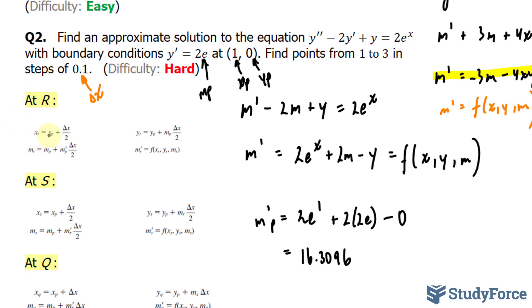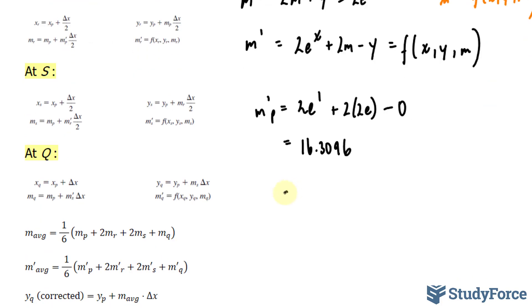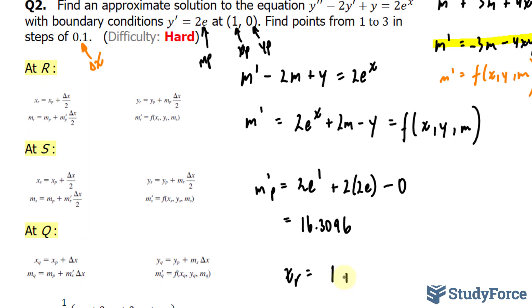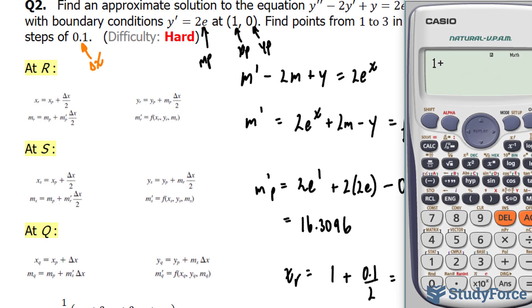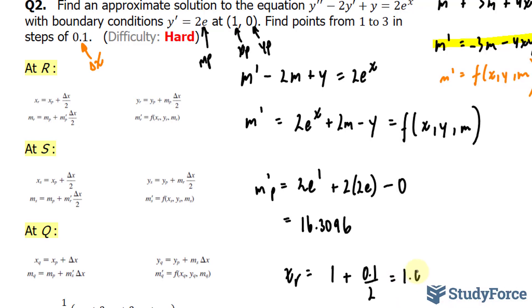Now that we've found m'_P, we can start to find the information we need at the point R. To do that, I'll be using these four formulas. Let's start with x_R. x_R is defined as x_P + Δx/2. x_P is 1 plus Δx, in our case is 0.1 divided by 2. Using my calculator, 1 plus 0.1 over 2 gives us 1.05.